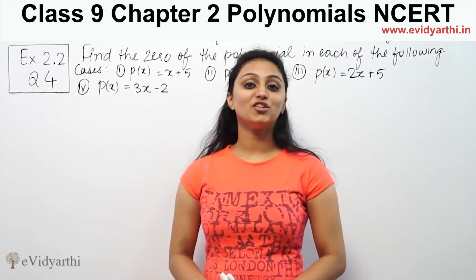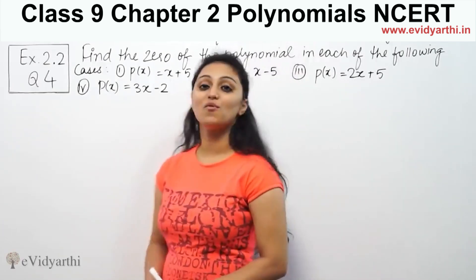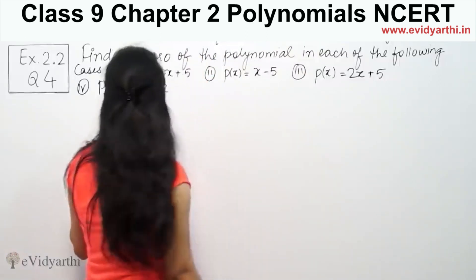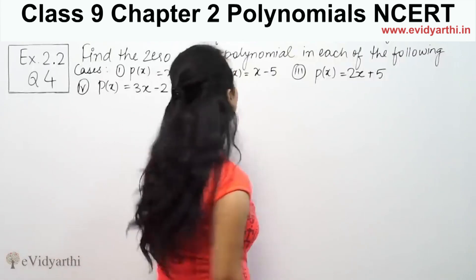Hi, this is Khush Phubal. Another question of polynomials. This is question number 4 from exercise 2.2, page number 35 from NCERT. It says find the zero of the polynomial in each of the following.